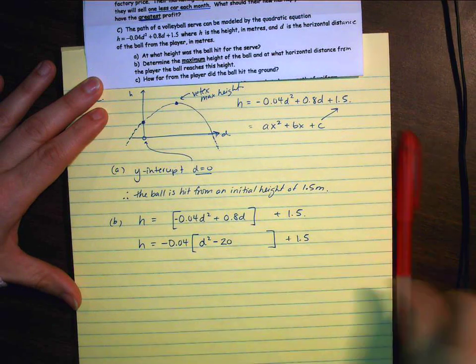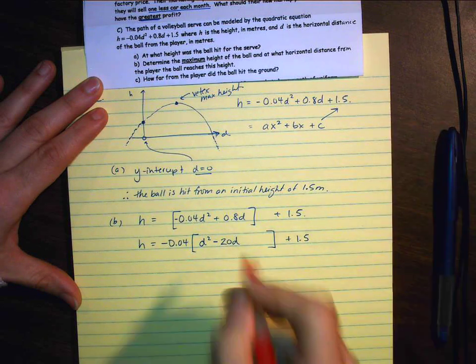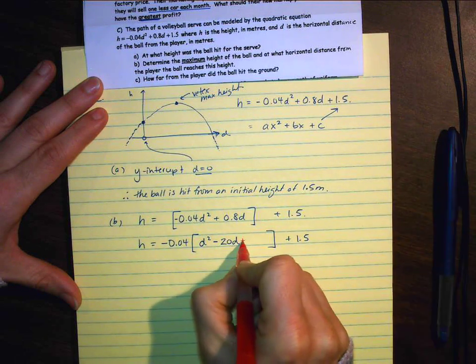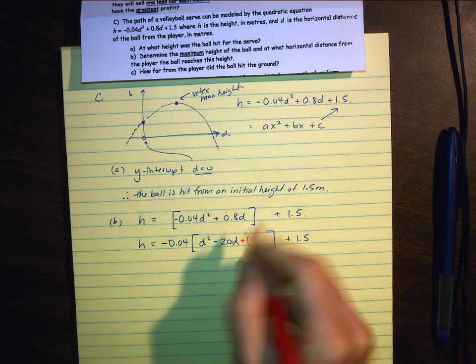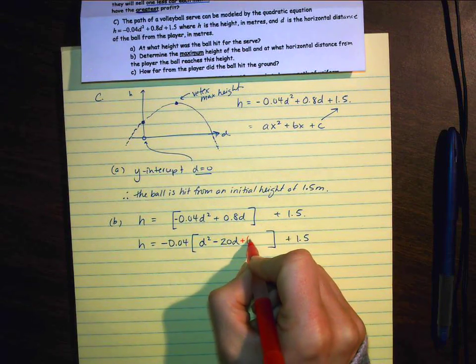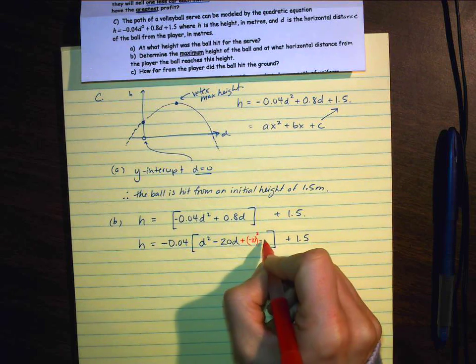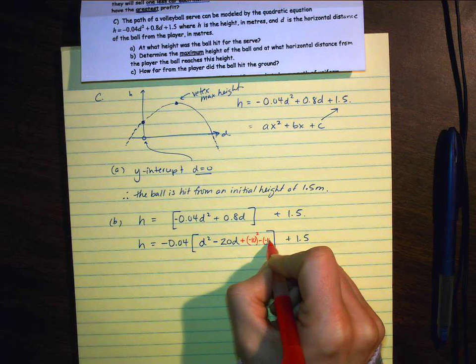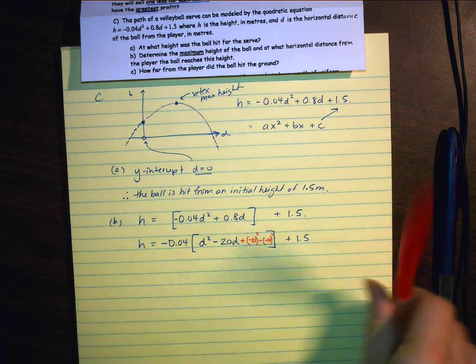So I'm going to take this middle term. So I forgot the d. Take this middle term. I need to add something to make it a perfect square. I need to add half of this, which is going to be negative 10. And it needs to be squared. So I'm also going to subtract the same thing. Because I want that to be zero. I want to have really done nothing.